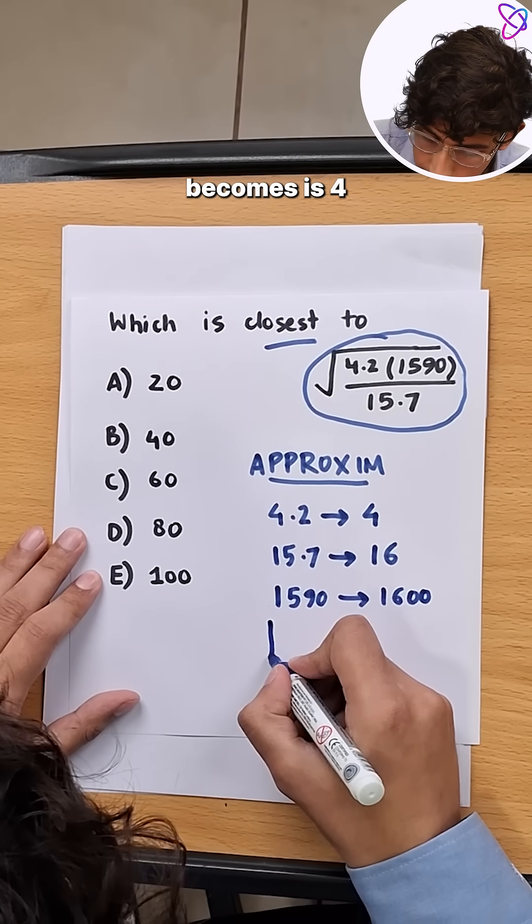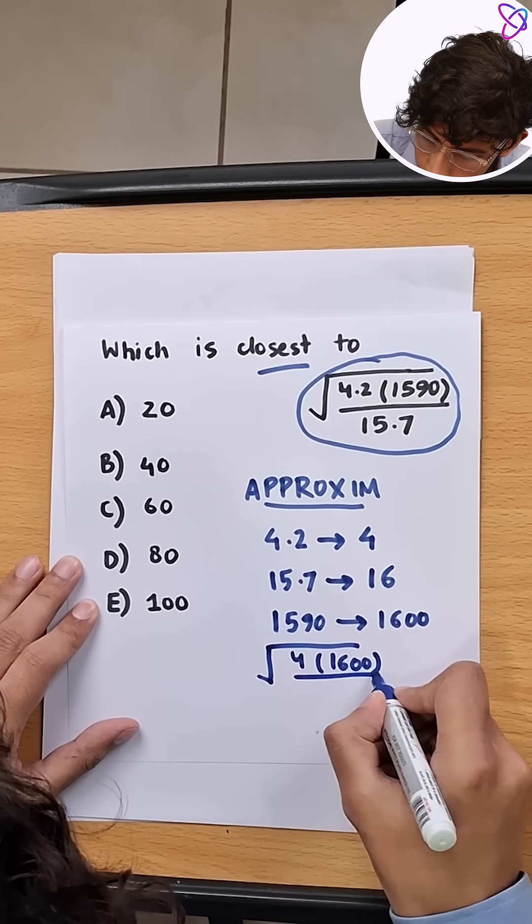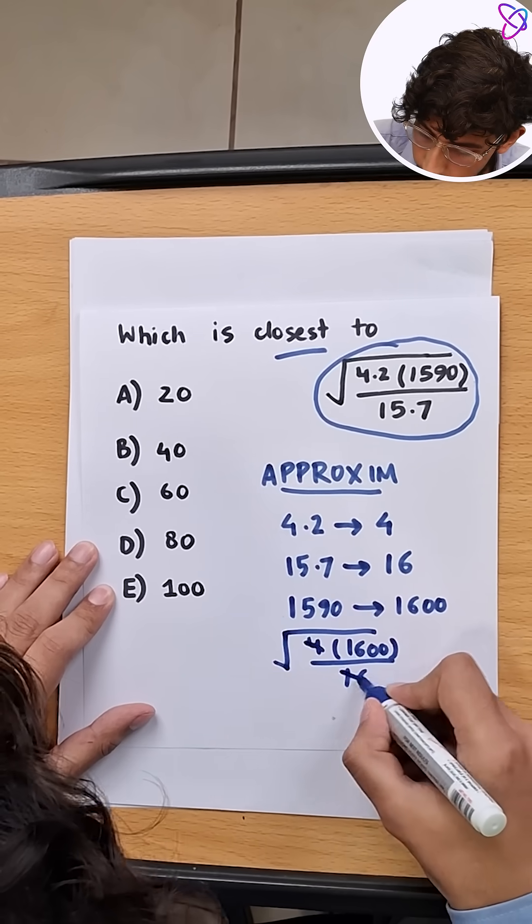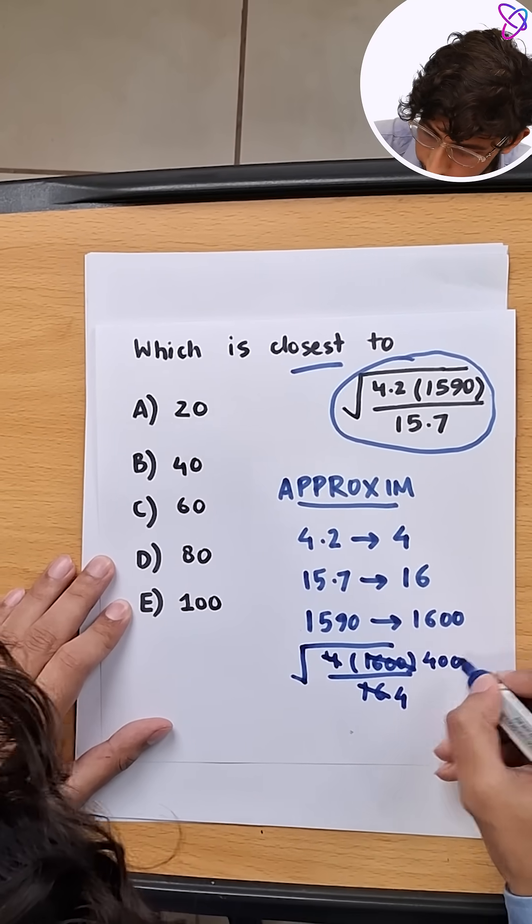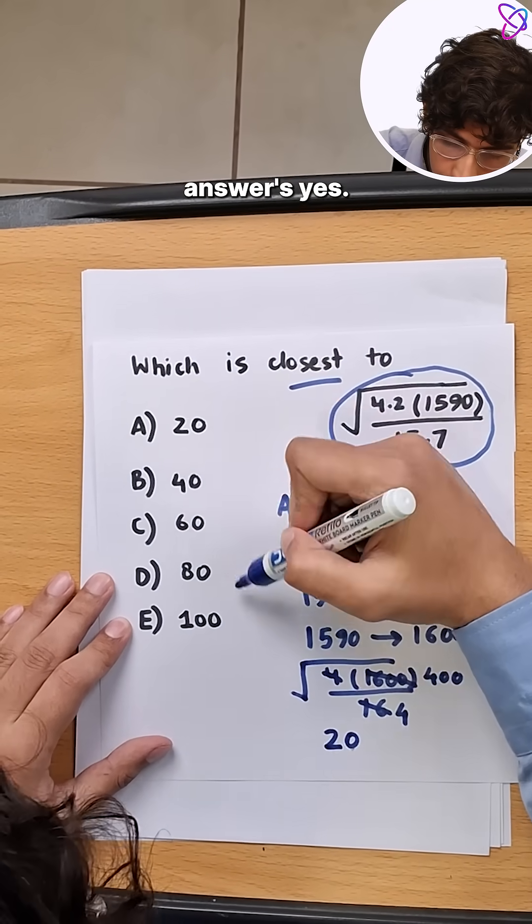So now what this becomes is 4 times 1600 upon 16. Four, four's are 16, four hundreds. Square root of 400, 20. We see 20 in the answers, yes.